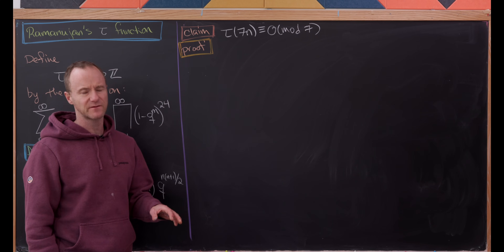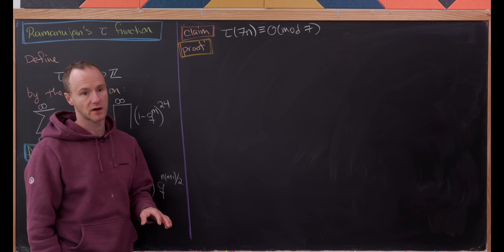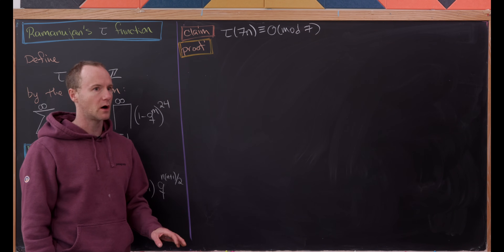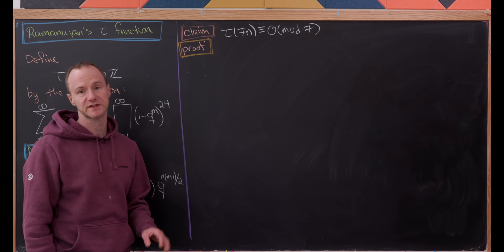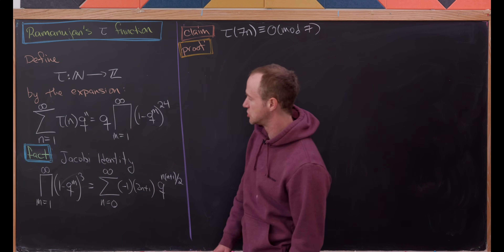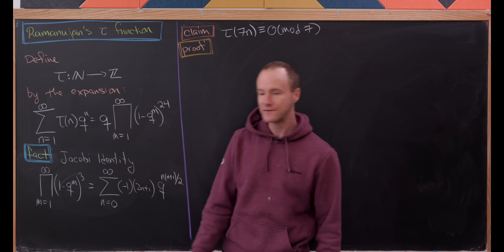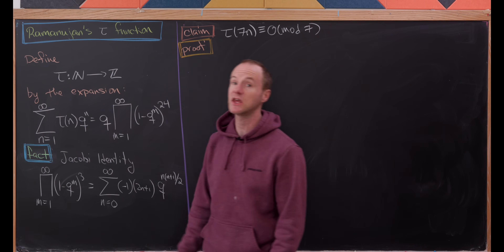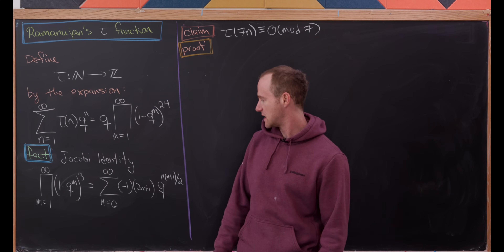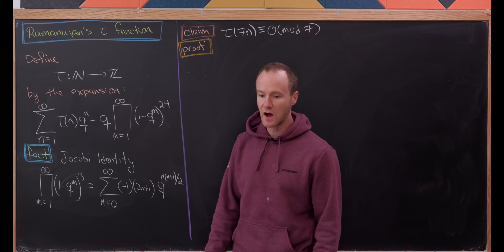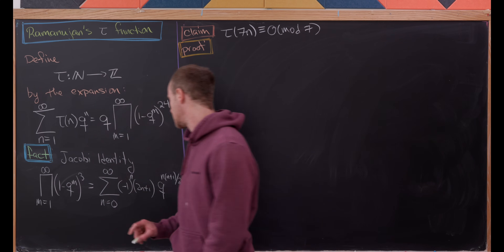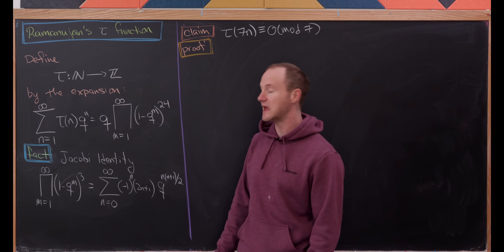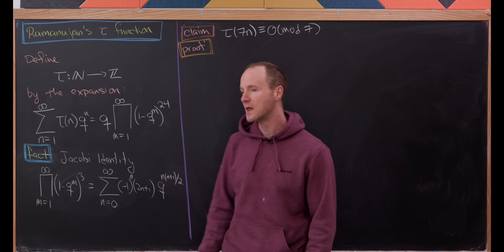We're going to use a fairly powerful tool related to something called the Jacobi triple product — I actually made a video on this long ago — and that is Jacobi's identity. It says that the infinite product as m goes from 1 to infinity of (1 - q^m)³ equals the sum as n goes from 0 to infinity of (-1)^n times (2n+1) times q^(n(n+1)/2).